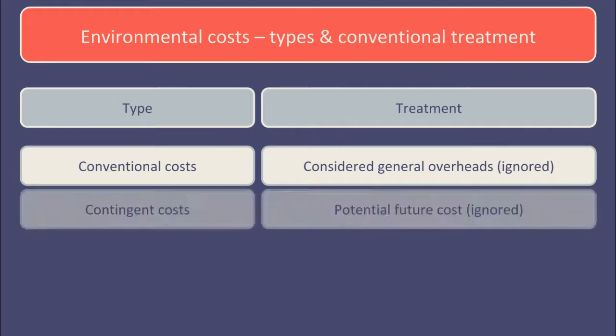Then there's contingent costs — for example potential future compliance costs or the decommissioning costs to eliminate the environmental impact of the closure of a site. These often occur in the future and as such are not considered by management, who may have a myopic view.